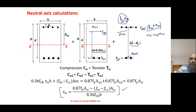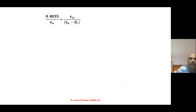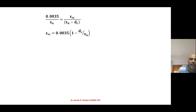An important formula: 0.0035 / xu = epsilon_sc / (xu - dc). From this we get the strain in the compression steel: epsilon_sc = 0.0035 * (xu - dc) / xu. This formula is used to find the value of stress in the compression steel (fsc).